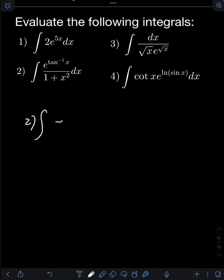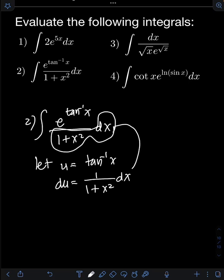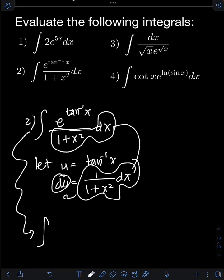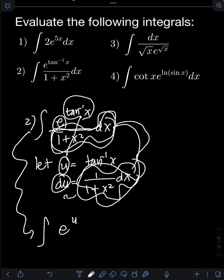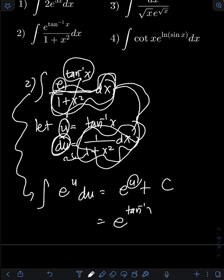For number 2, we have the integral of e raised to arctangent of x over 1 plus x squared dx. Using u-substitution, let u equal arctangent of x. The derivative gives du equals 1 over (1 plus x squared) dx. Notice this creates the term dx over (1 plus x squared), which equals du. Substituting, we get the integral of e raised to u du, which equals e raised to u plus c. Transforming back, the final answer is e raised to arctangent of x plus c.